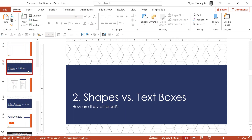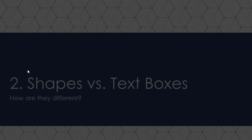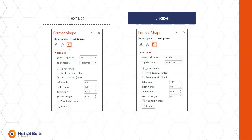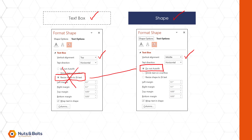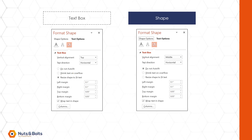Now let's talk about shapes versus text boxes. A default text box will always start with vertical alignment at the top, while a shape will always start at the middle. The big thing is: a default text box will always start with 'Resize shape to fit text,' and a shape will always start with 'Do not auto fit.' I strongly recommend that you always use 'Do not auto fit' for both your text boxes and your shapes.